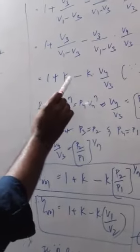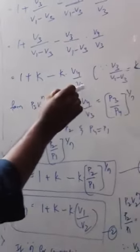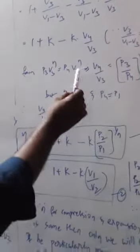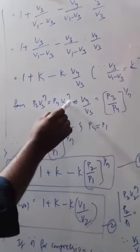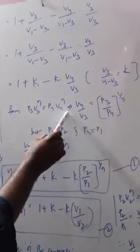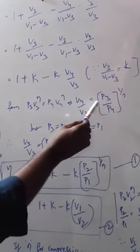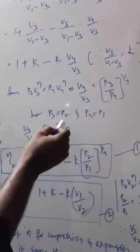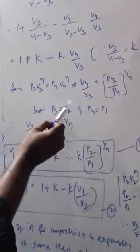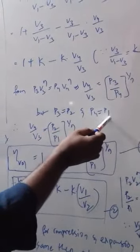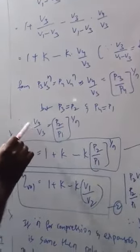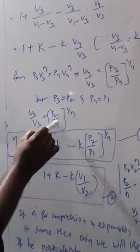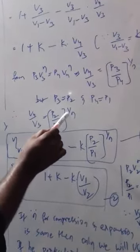Putting V3 by (V1 minus V3) as the clearance ratio K, we get: volumetric efficiency equals 1 plus K minus K into (V4 by V3). From the polytropic relation, P3 V3^N equals P4 V4^N, so V4 by V3 equals (P3 by P4) to the power of 1/N. Also, P3 equals P2 and P4 equals P1, giving us (P2 by P1) to the power of 1/N.